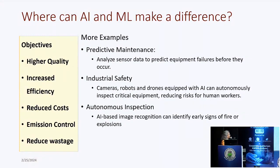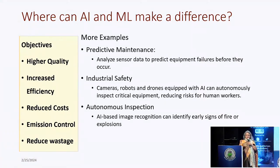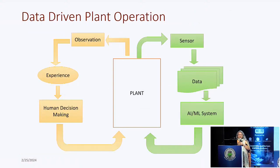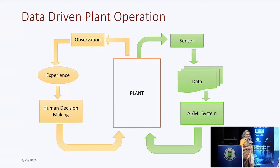In a system that's going to fail, there might be some accident that could happen. Autonomous inspection using image recognition is another area. These are a few of the areas where machine learning and AI can be directly used in a thermal power plant. This is just a model of a possibly data-driven plant operation overall.